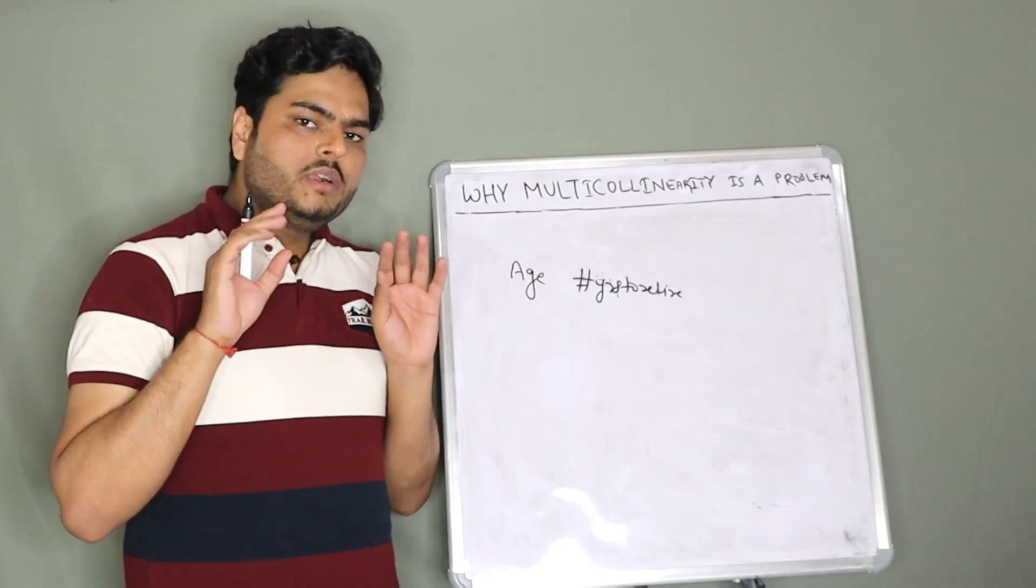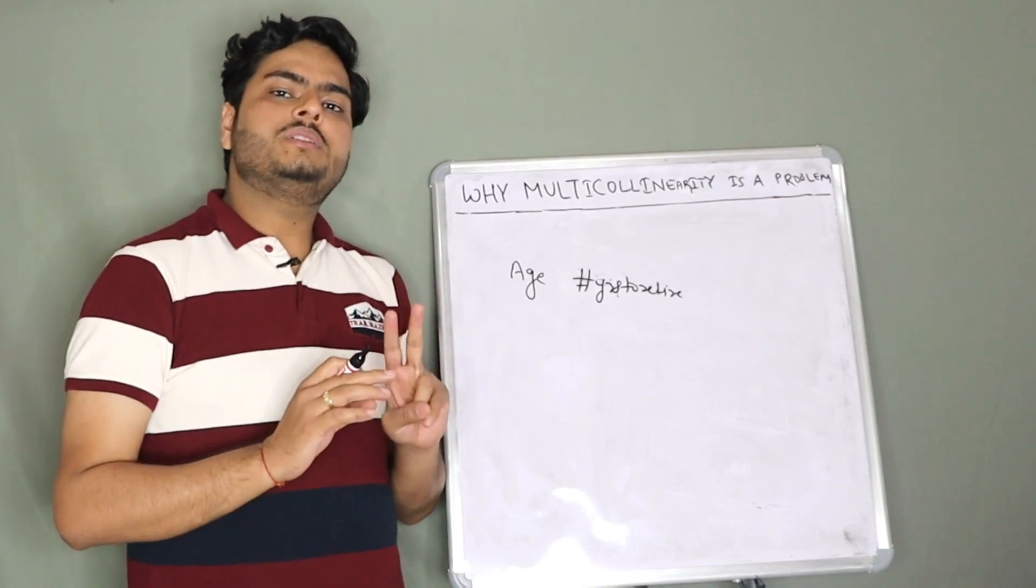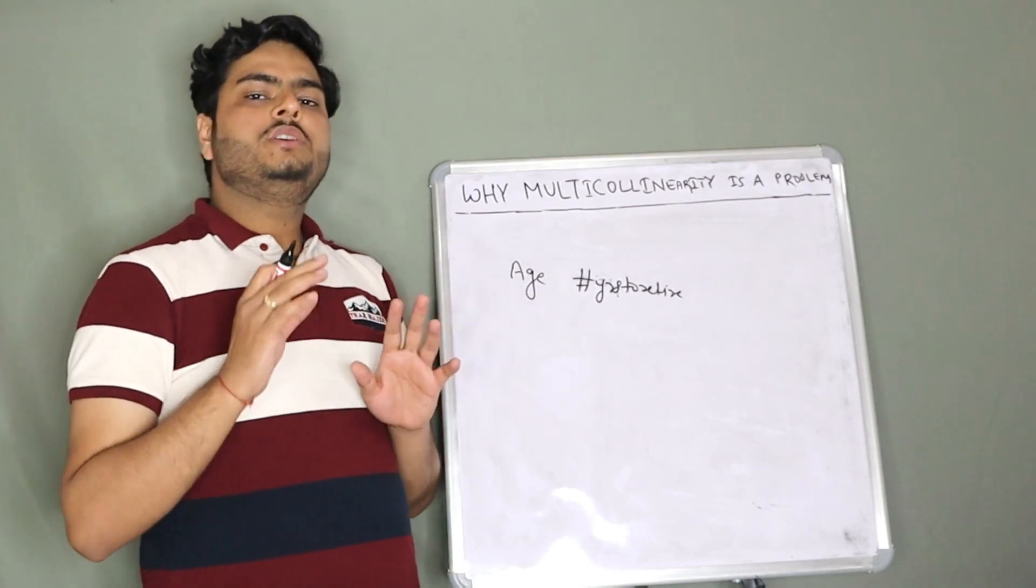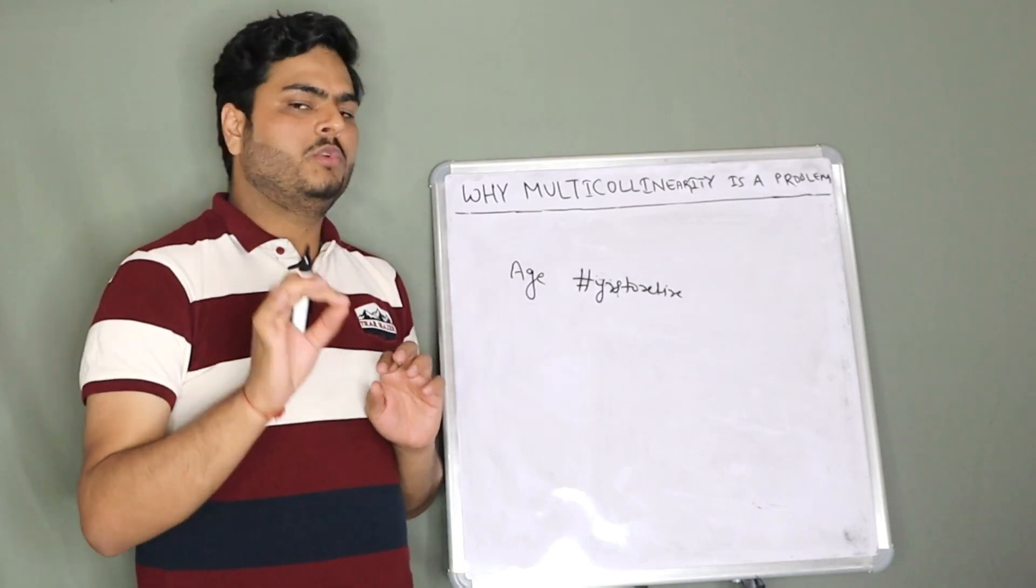In your data, if two variables are having any kind of correlation, negative or positive, that is called a multicollinearity problem.